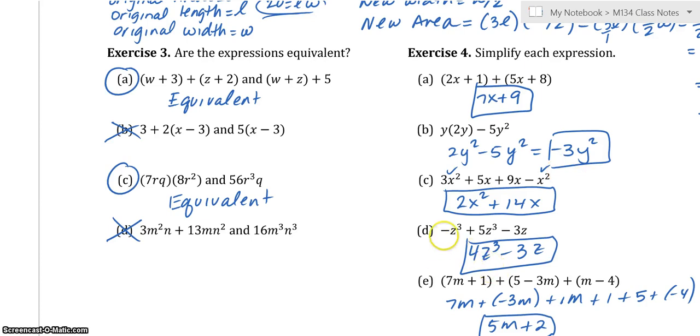In part D, you can combine these two. They have the same variable parts, so negative 1 plus 5 is a 4. Again, when there's nothing in front of there, it's a 1. And then this one, I did show you the work here,